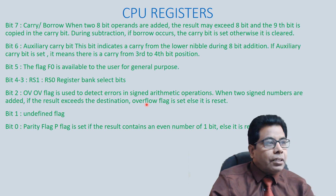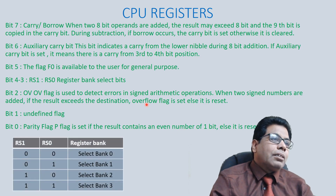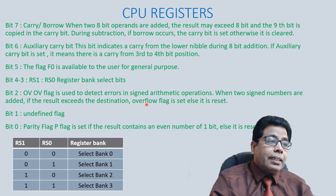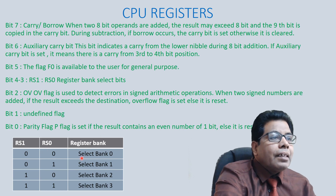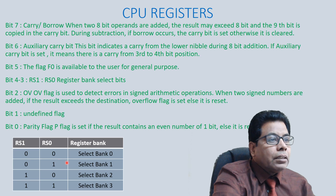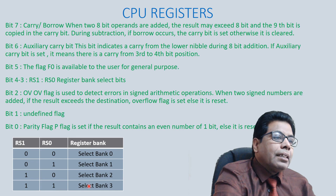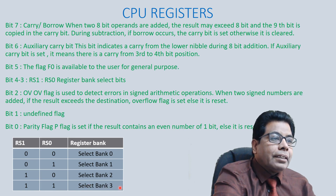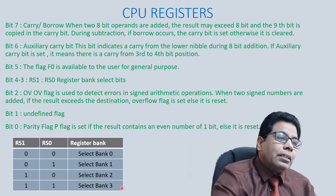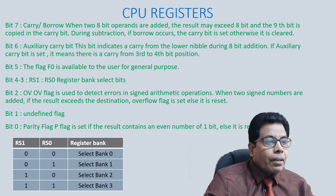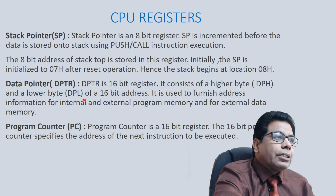RS1 and RS0 together decide which register bank is selected: 00 selects Bank 0, 01 selects Bank 1, 10 selects Bank 2, and 11 selects Bank 3. This allows selection among the four register banks in the 8051.